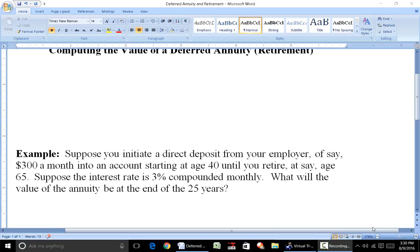So in this example, I chose, say, $300 a month. And I say you start doing this at age 40. You could do it earlier than that, but let's just say age 40 for the purpose of this example. And say you plan to retire at 65. And let's suppose that the interest rate that you're going to be getting is 3% compounded monthly.